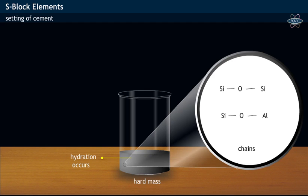During this process, it results in the formation of SiO-Si chains along with SiO-Al chains. This setting process of cement is associated with the loss of huge amounts of energy.